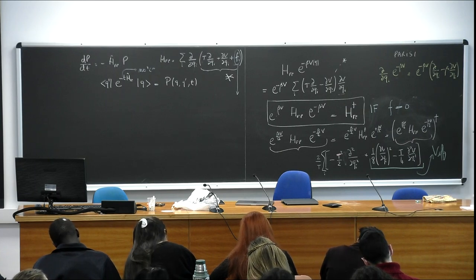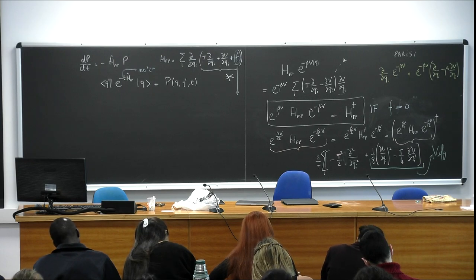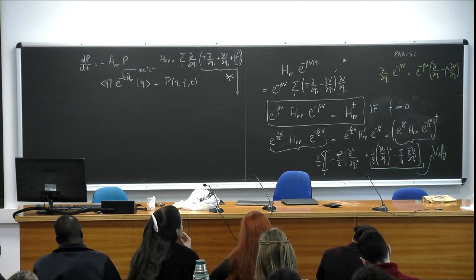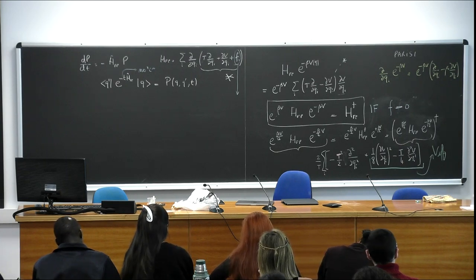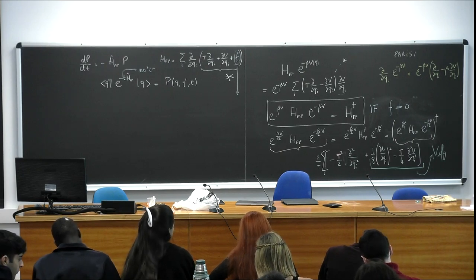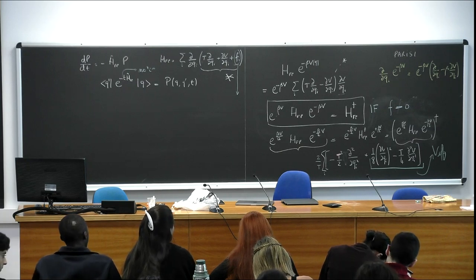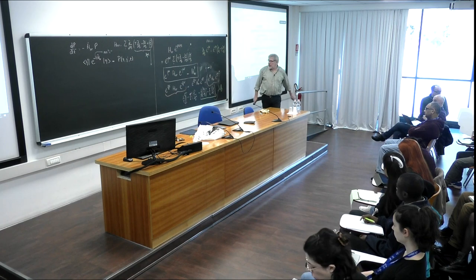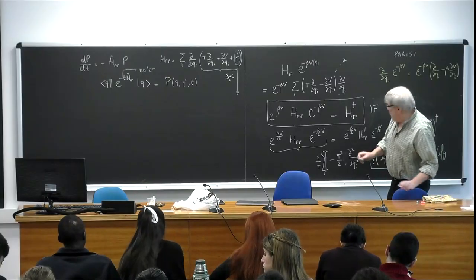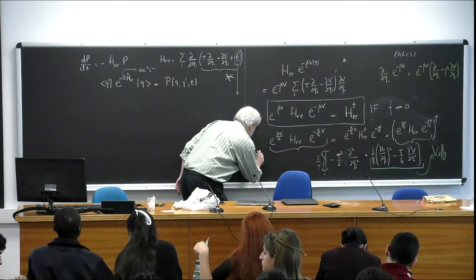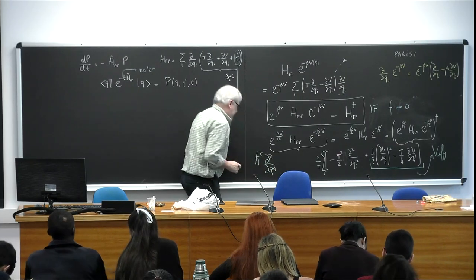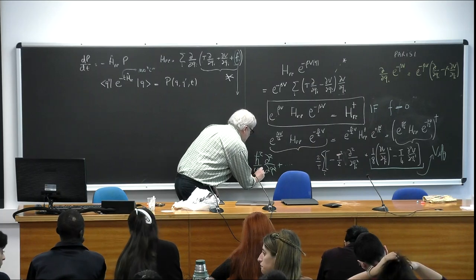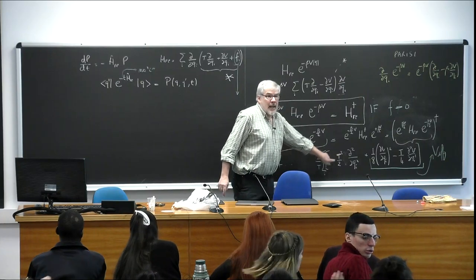It's clear that it's Hermitian, and this underlines the fact that temperature plays the role of ħ, which is very important. Low temperature means little noise, semi-classical — we will come back to this. This is clear why T plays the role of ħ: in the Schrödinger equation, ħ plays the same role as the temperature here.